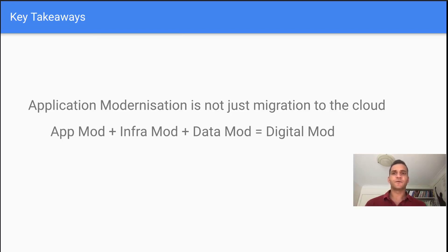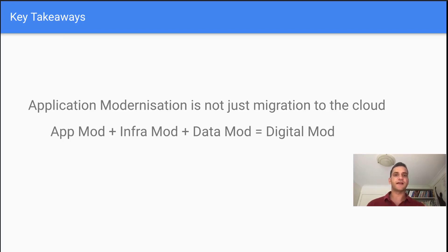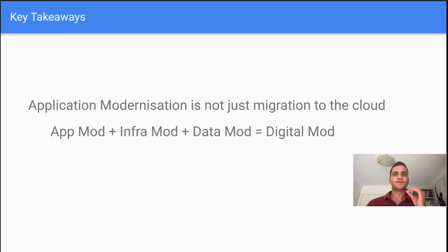As we embark on our exploration of digital modernization today, it's crucial to dispel the misconception that it merely involves migrating applications to the cloud. The landscape of modernization extends beyond a simple relocation. It encompasses a holistic transformation that integrates three essential elements: application modernization, infrastructure modernization, and data modernization.